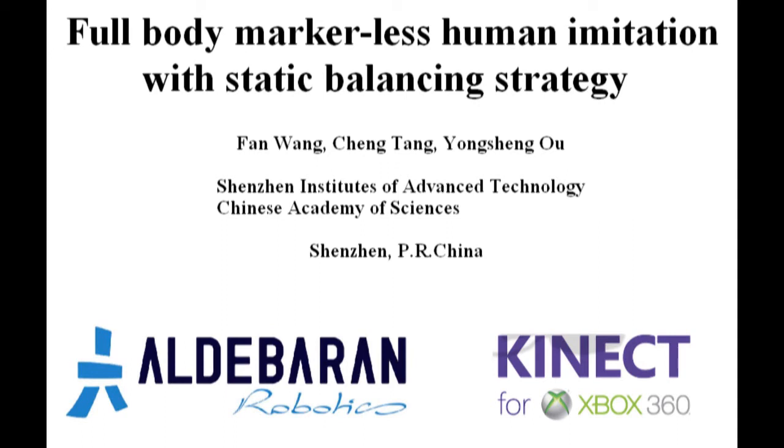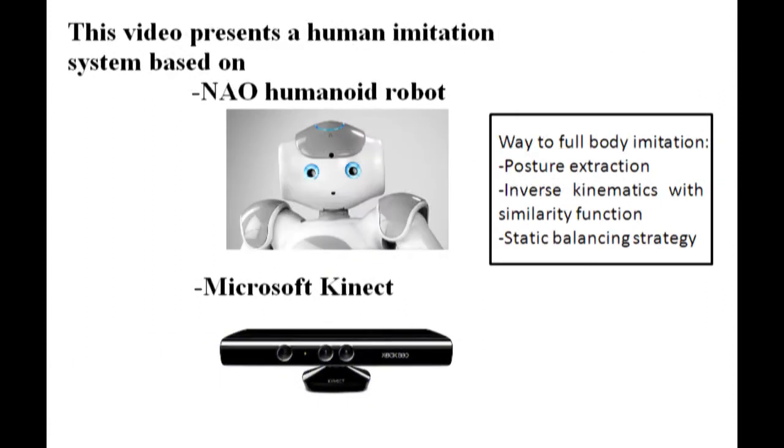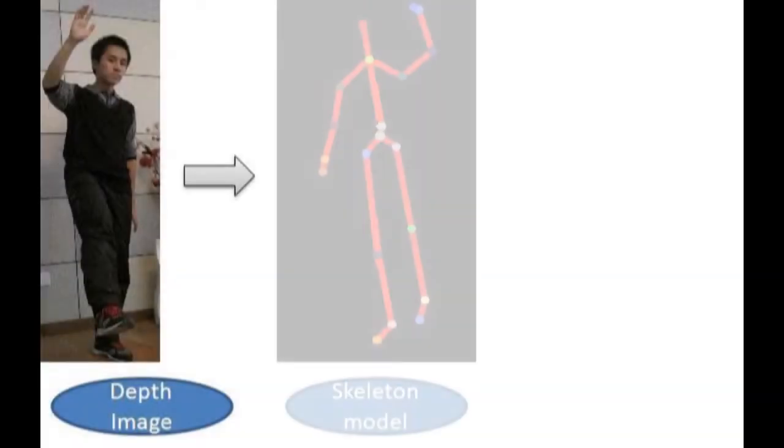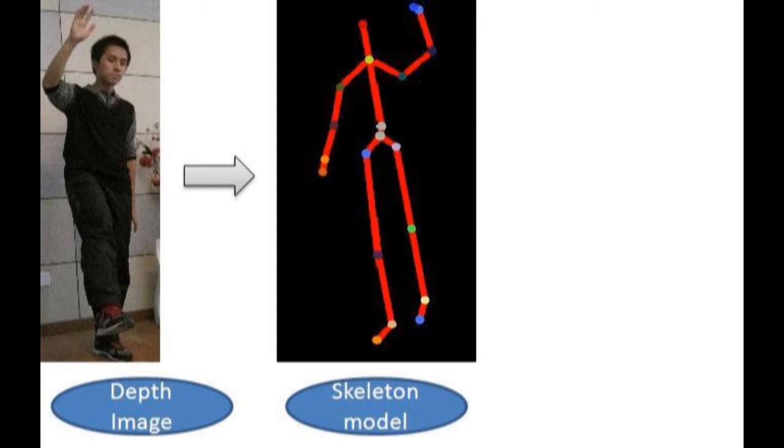This video shows a full-body human imitation system based on NAO humanoid robot and Kinect visual system. At first, Kinect acquires the posture of human bodies through the depth image based on human skeleton model.